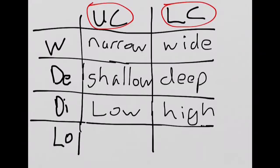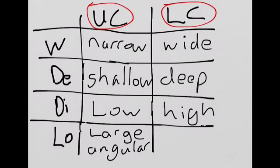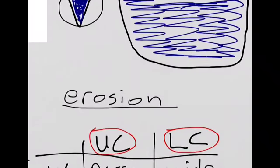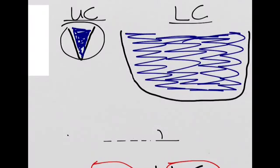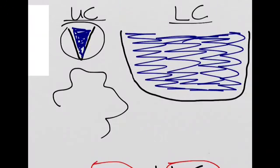In terms of load, at the source or in the upper course the load is large and angular, and at the lower course the load is small and rounded. If we come up to the diagram, and we try to represent this, in the upper course we have large boulders which are quite angular. Basically they have not been subject to much erosion, and when we come down to the lower course, we have got small, smooth rounded pebbles.